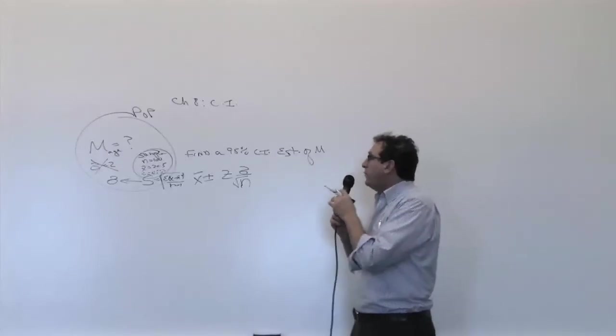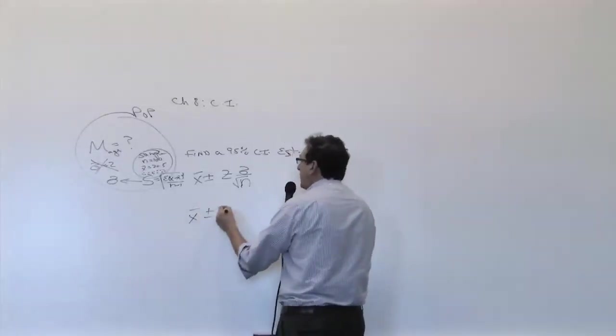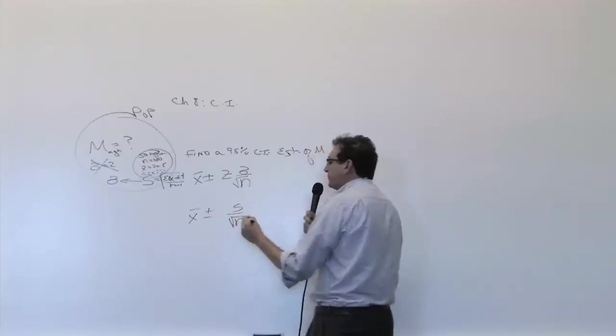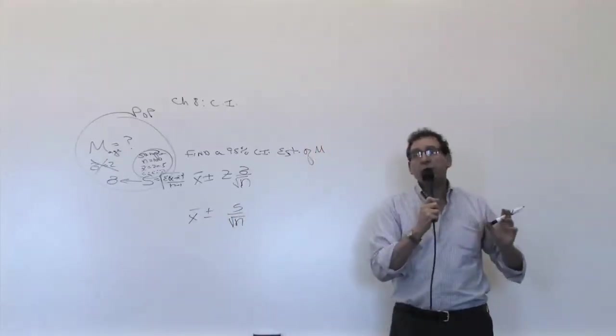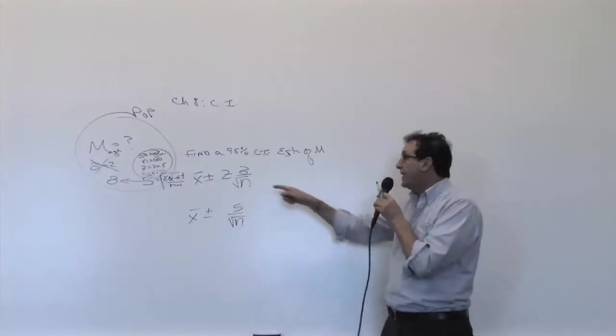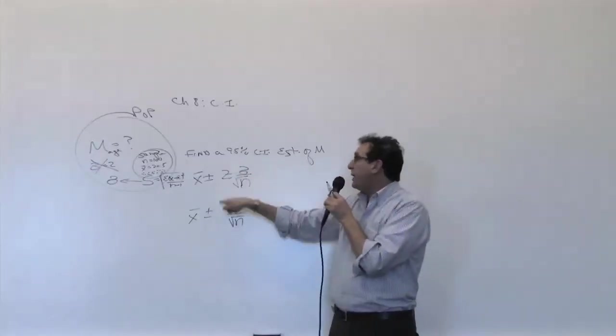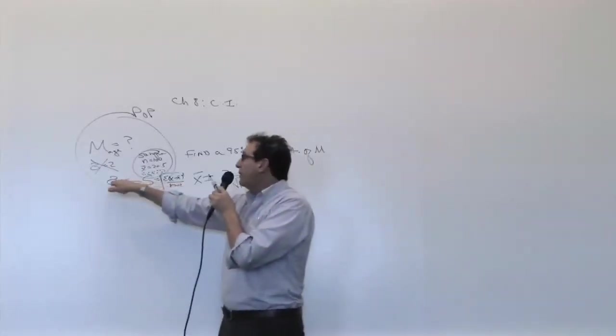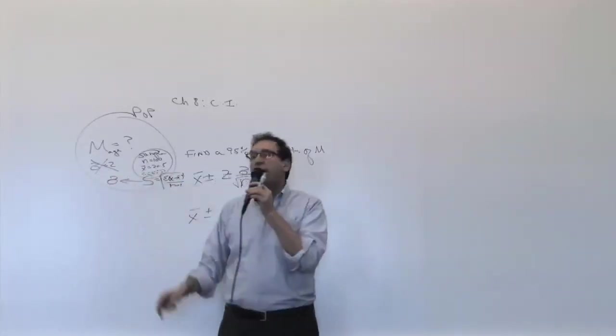Now, so therefore, the formula we're going to use right now is going to be x-bar plus or minus - instead of sigma over square root of n, it's going to be S over square root of n. But now we have another modification to make, which is, do you think with the Z, will everything else stay the same? And the answer is no, because which is more certain?